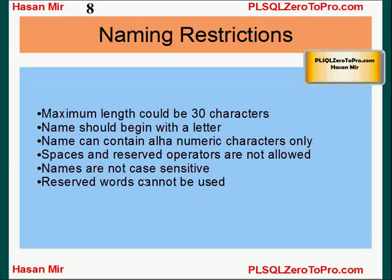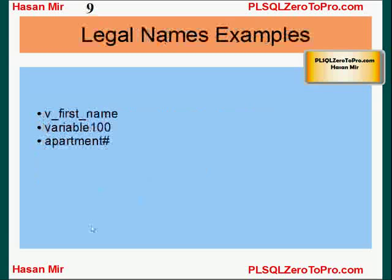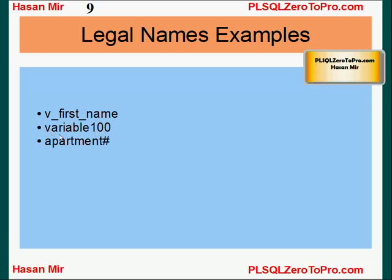That's why I always prefix my variable name with v underscore to avoid all these problems. Here are a few examples of legal variable names. v underscore first name — this is what I prefer and it's a normal convention used by most programmers: just put v underscore and then the variable name. Variable hundred is fine — hundred is like a number but it's not used in the beginning; the beginning of this variable name is a letter, which is compulsory. You can use some non-alphanumeric characters, but you should avoid that as much as you can.